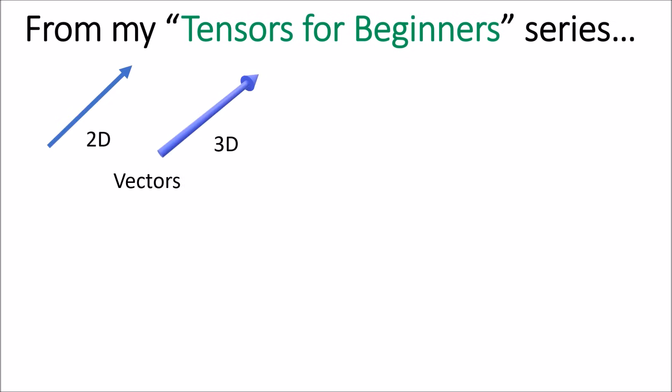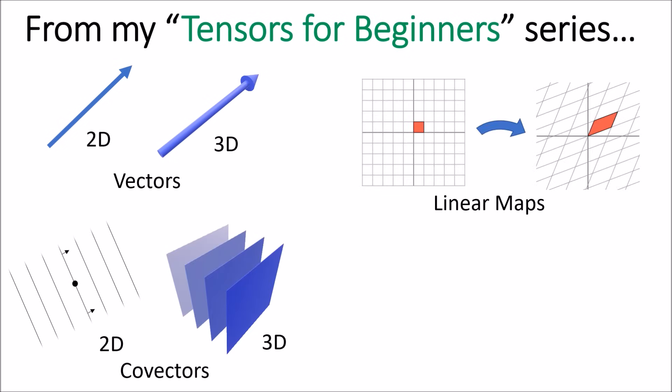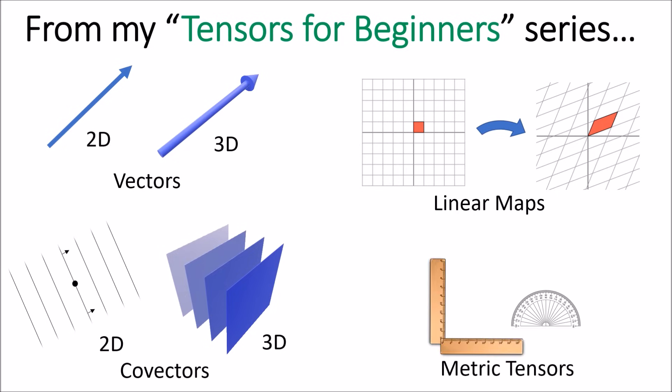You'll have seen vectors, which are like arrows; co-vectors, which are like stacks; linear maps, which are spatial transforms that keep lines parallel and evenly spaced; and the metric tensor, which is like a machine for measuring lengths and angles in space. All of these geometrical objects are tensors, and if we have a set of coordinate basis vectors we can measure the components of these tensors.